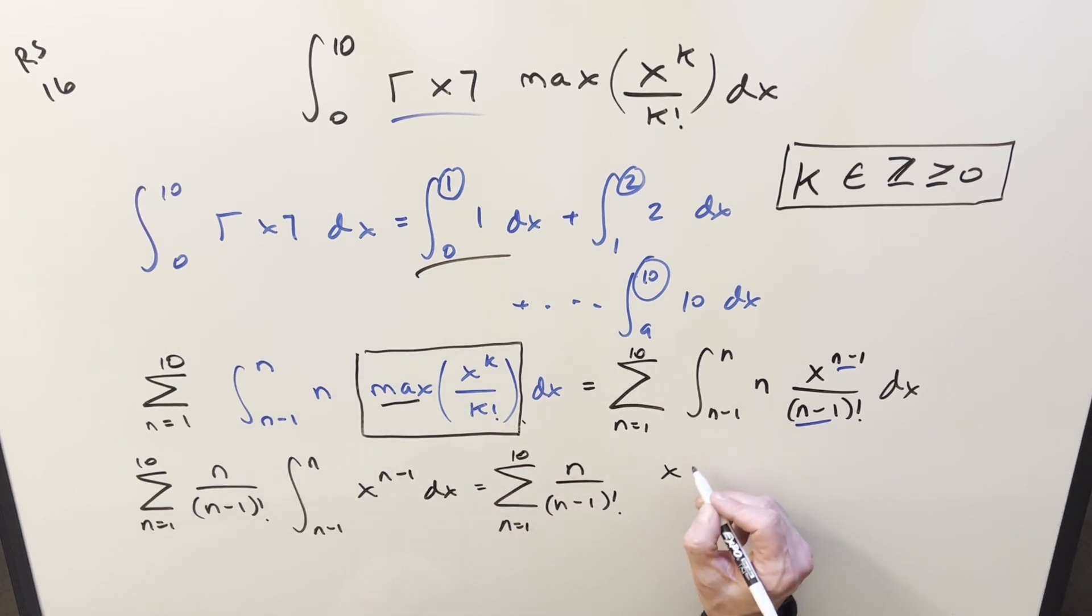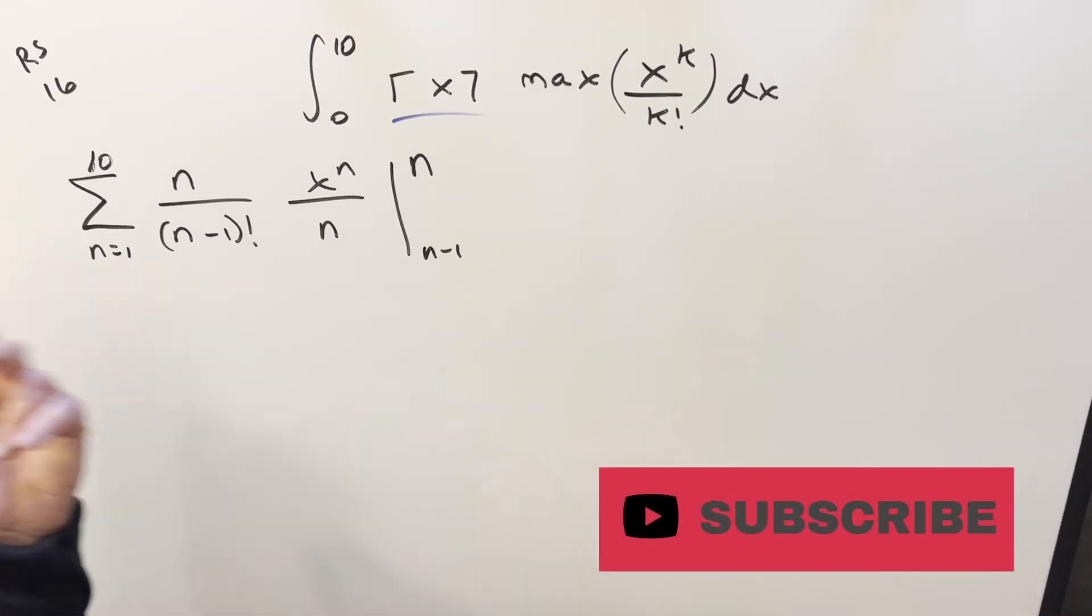So doing that here, we're going to get x to the n over n, and we just need to evaluate that from n minus 1 to n. Now at this point, you may notice we could simplify this a few different ways. I'm going to put it off, because I know we have to simplify later. So we'll leave that, and we'll just evaluate these bounds.